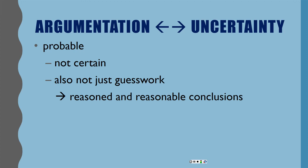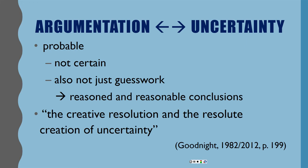We don't want to make decisions arbitrarily or decisions that hurt other people — we want to make decisions that are rational. So we try to figure out how do we resolve that uncertainty even if we can never totally resolve it. In the article you should have read for today, Tom Goodnight — a rhetorician who happens to still be alive — talks about how argumentation is often bound up in the creative resolution and the resolute creation of uncertainty.